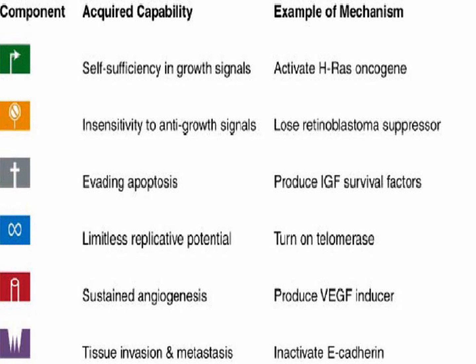To recap the hallmarks of cancer: self-sufficiency in growth signals, exemplified by activation of the HRAS oncogene; insensitivity to anti-growth signals, from loss of the retinoblastoma suppressor; evading apoptosis, through production of IGF survival factors; limitless replicative potential, meaning telomerase is turned on; sustained angiogenesis, through production of VEGF; and tissue invasion and metastasis, through inactivation of E-cadherin.